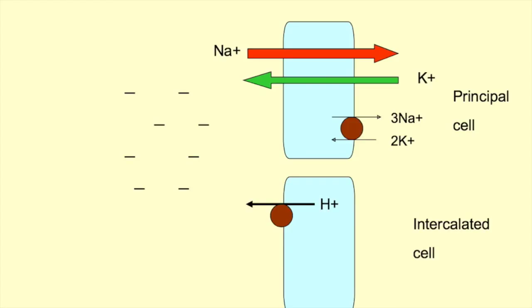They do this primarily by their action on transport processes in the collecting tubule. Normally, in the collecting tubule, sodium is reabsorbed through epithelial sodium channels, leaving behind negative charges in the lumen and setting up an electrical gradient for the passive secretion of cations such as potassium and hydrogen ion.